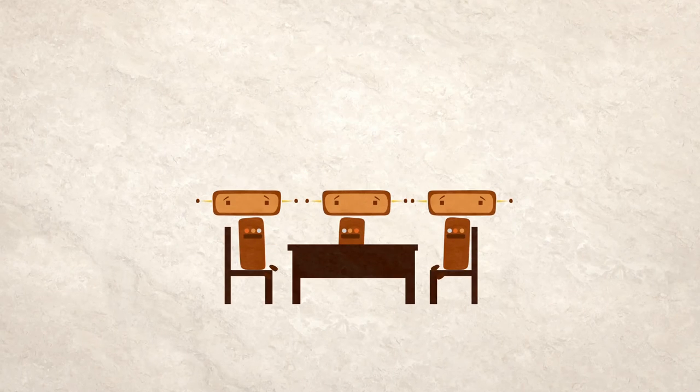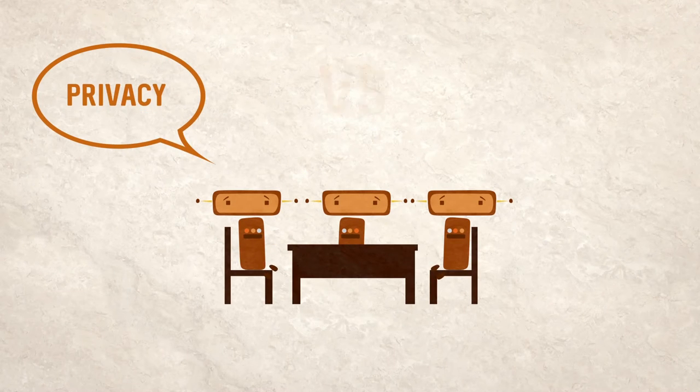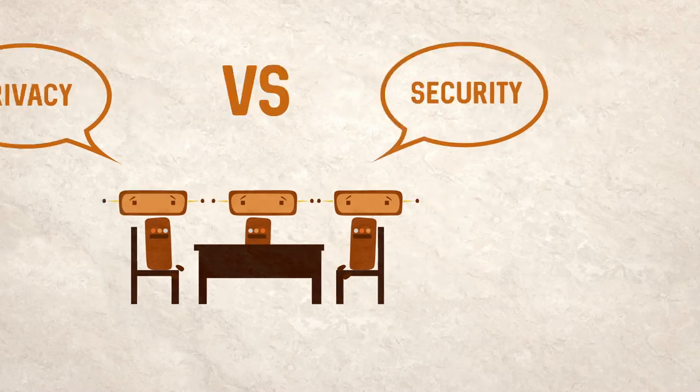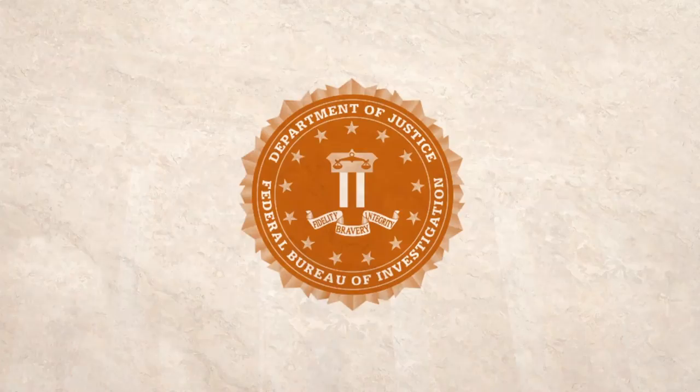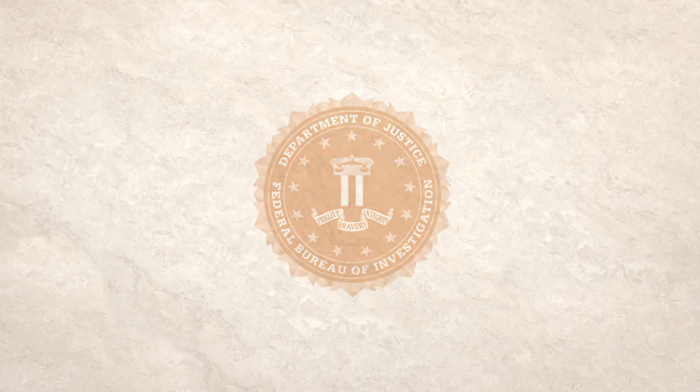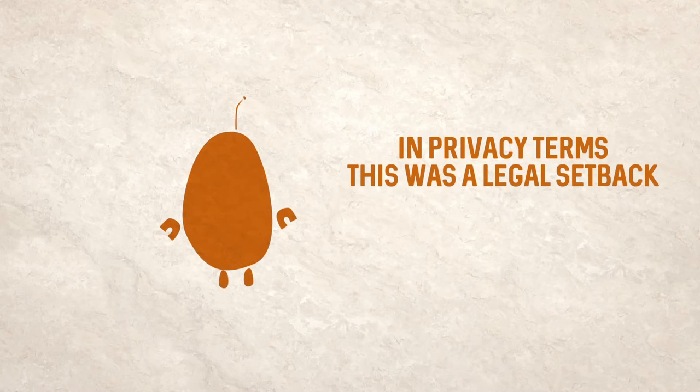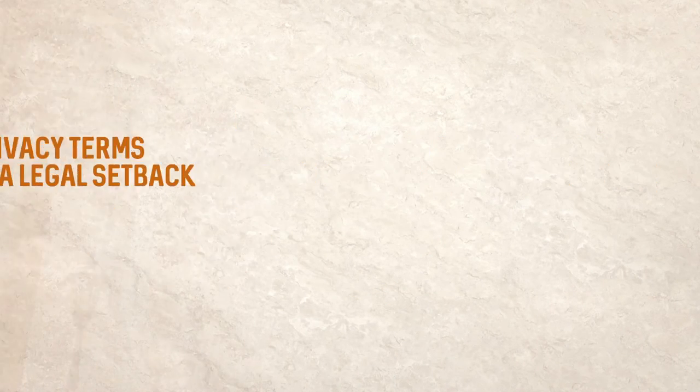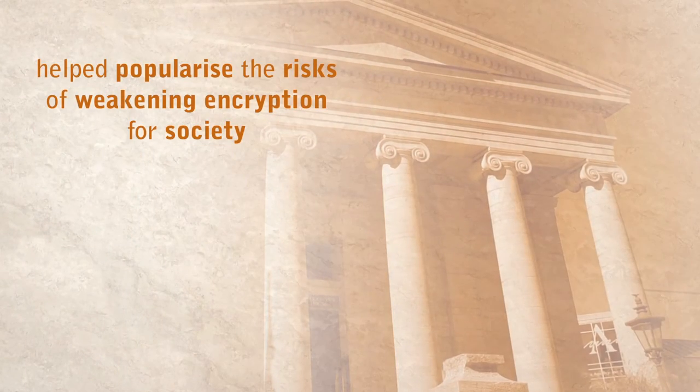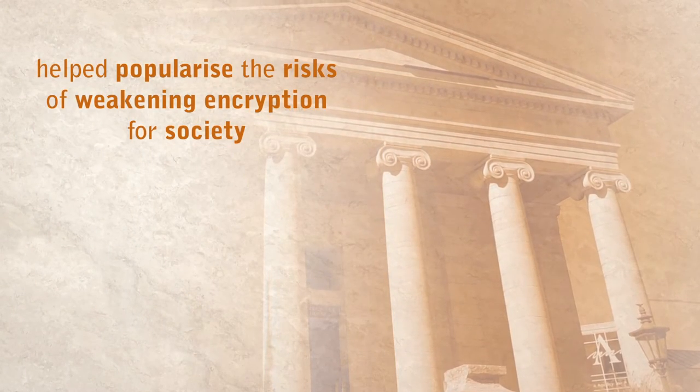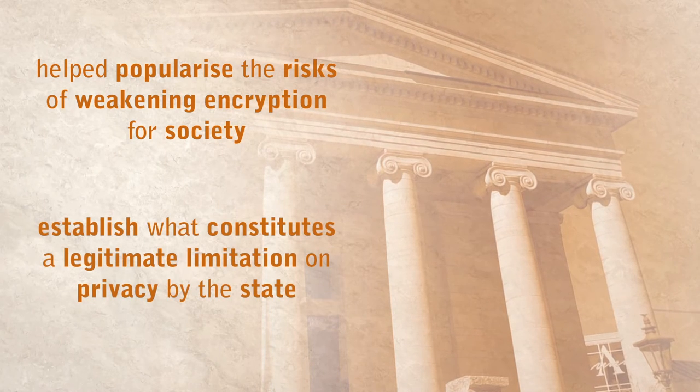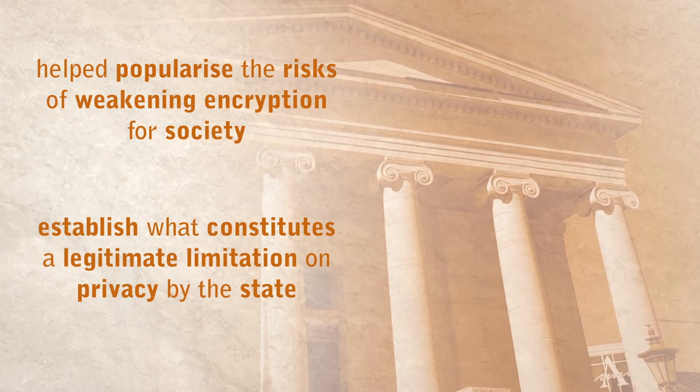This opened a lively debate on the right to privacy versus security needs. The case was almost taken to court, but in the end, the FBI found a vulnerability to crack the phone. In privacy terms, this was a legal setback. If the case had gone to court, it could have helped popularize the risks of weakening encryption for society and establish what constitutes a legitimate limitation on privacy by the state.